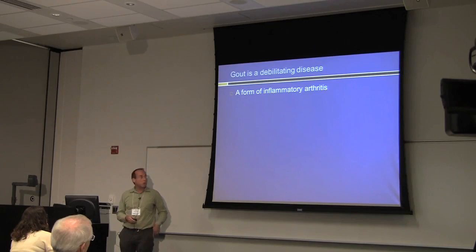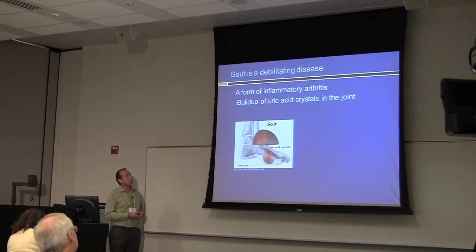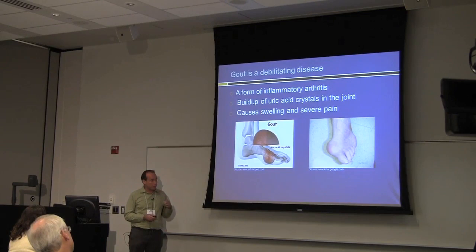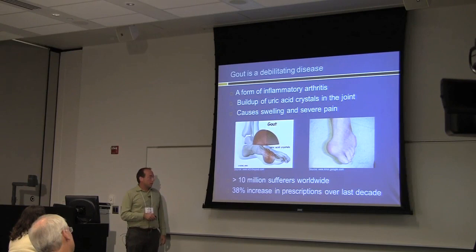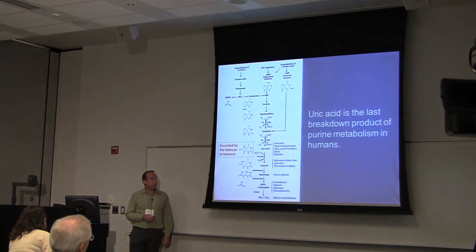Some of you probably know that gout is a form of inflammatory arthritis. Maybe you have family members that have been afflicted by this. Gout is caused by the buildup of monosodium urate crystals in the joints. These are highly insoluble molecules, and they cause much pain in the patient. This mostly takes place in the distal, peripheral joints. There are more than 10 million sufferers worldwide, with a large increase in prescriptions over the past decade, especially as baby boomers age.